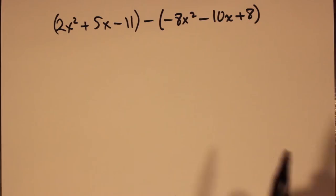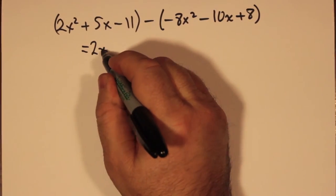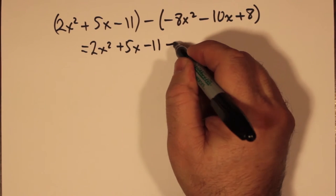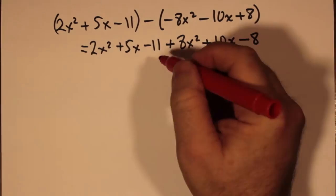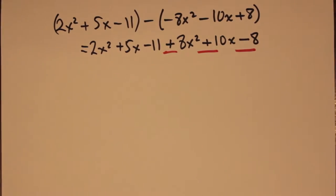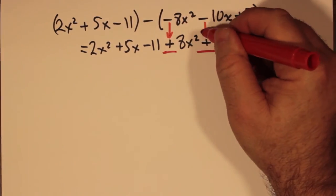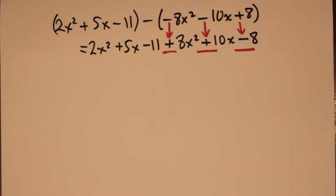The minus in front of the second polynomial changes the signs of everything inside the bracket, just like before. So then what we end up having to do is to have 2x squared plus 5x minus 11 plus 8x squared plus 10x minus 8. All the signs flip inside the second bracket, once we take our brackets off.